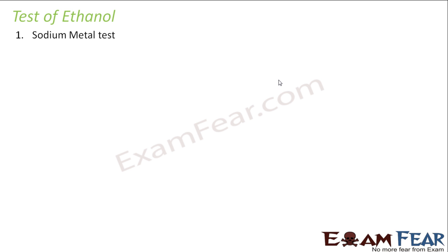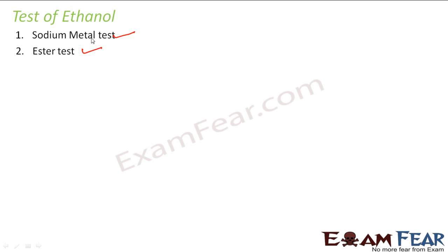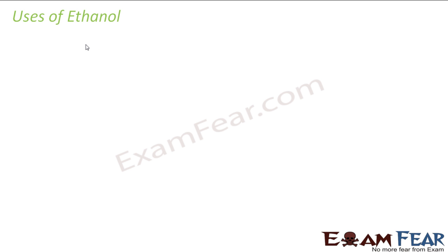For the test of ethanol: you can use the sodium test — add sodium and you get hydrogen gas, the reaction confirms ethanol. Or you can use the ester test — for alcohol, you add a carboxylic acid and you get a sweet-smelling ester.